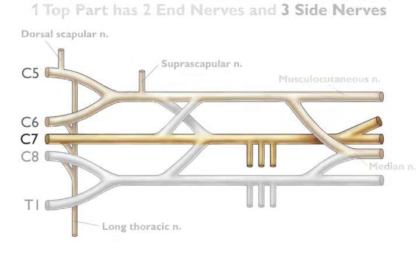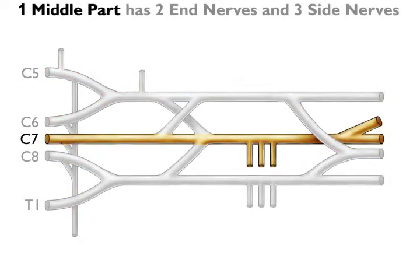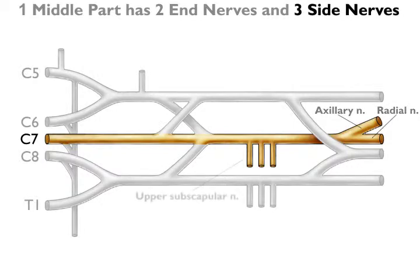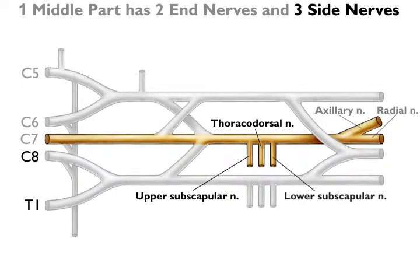Moving to the middle part of the plexus: 1 middle part, 2 end nerves — the axillary nerve and the radial nerve. 3 side nerves: the upper subscapular nerve, the thoracodorsal nerve, and the lower subscapular nerve.